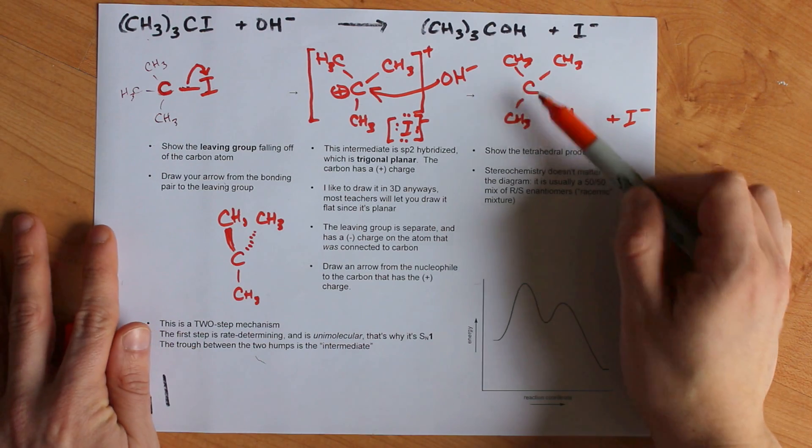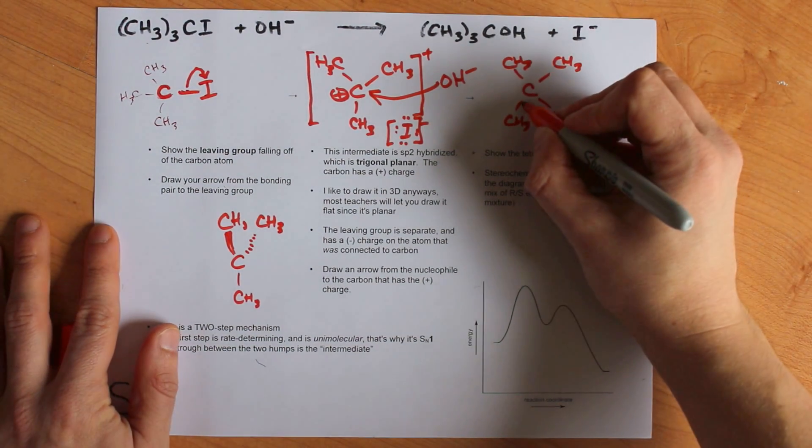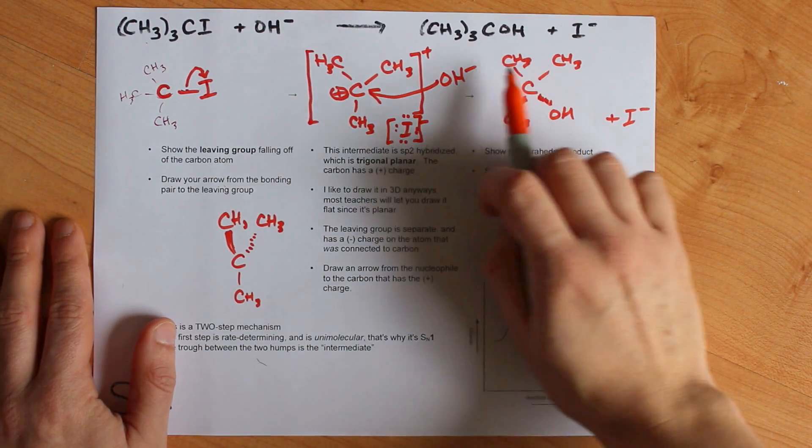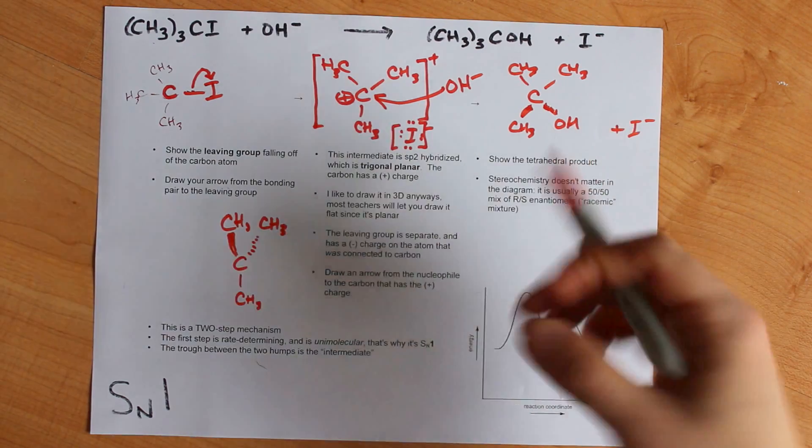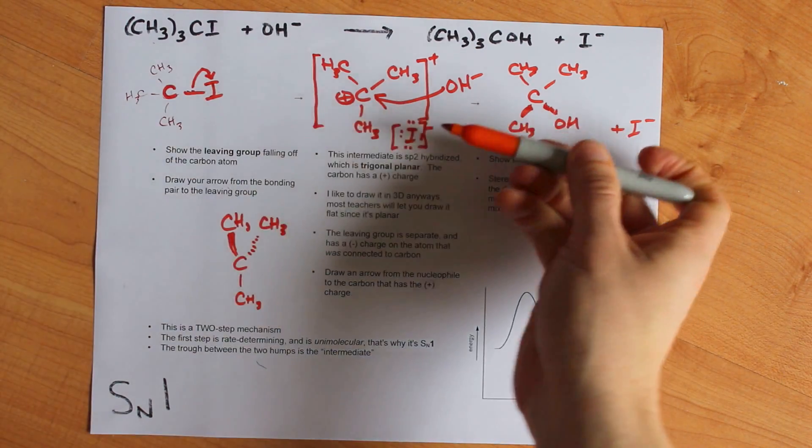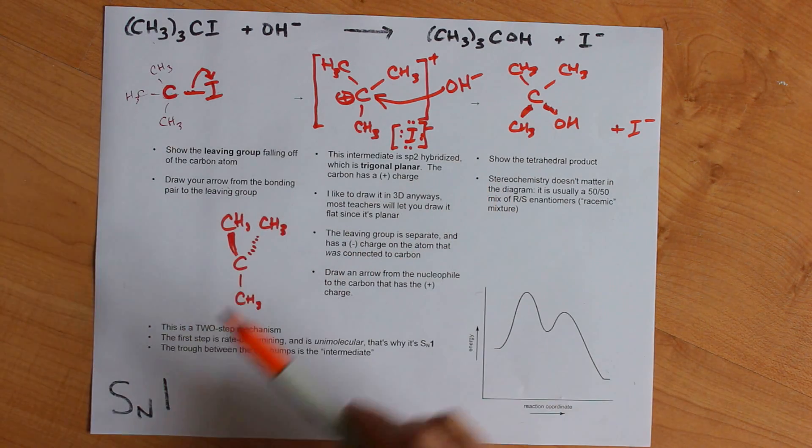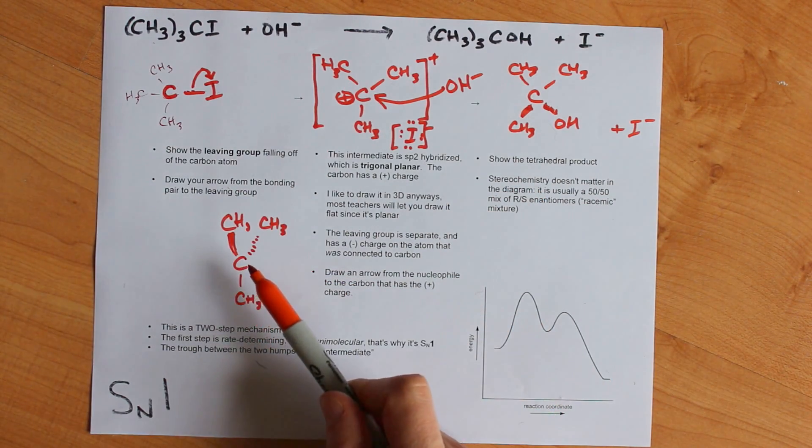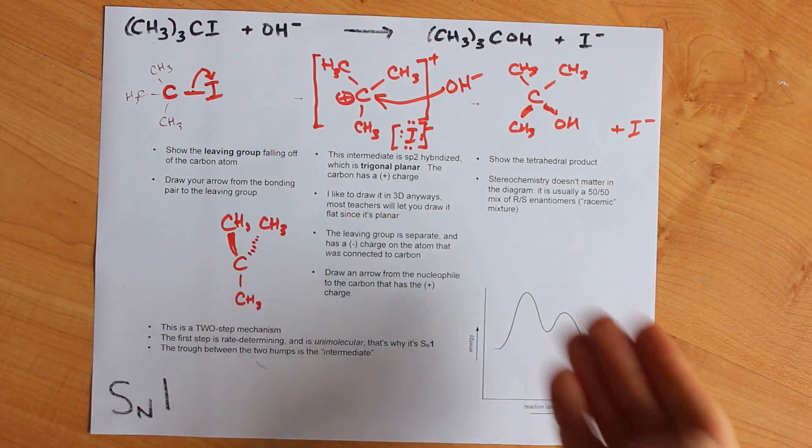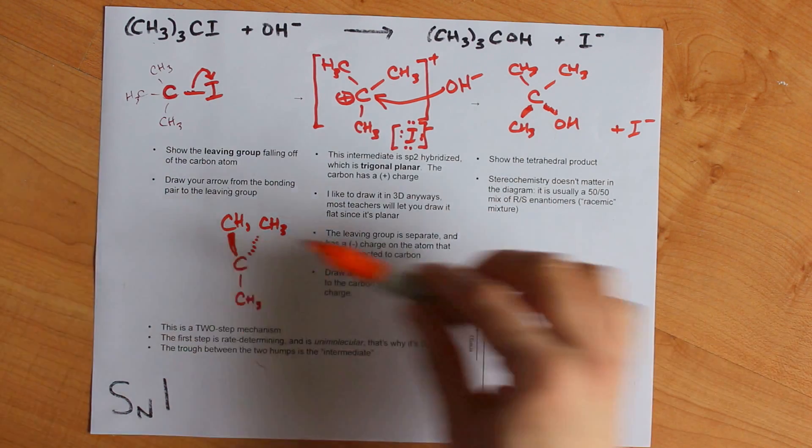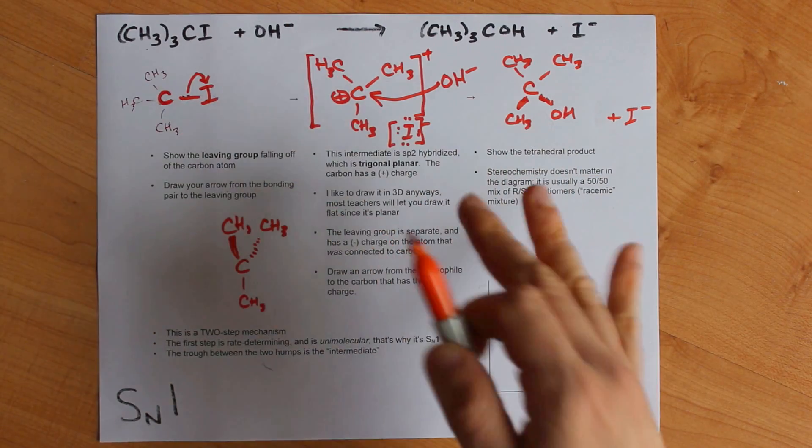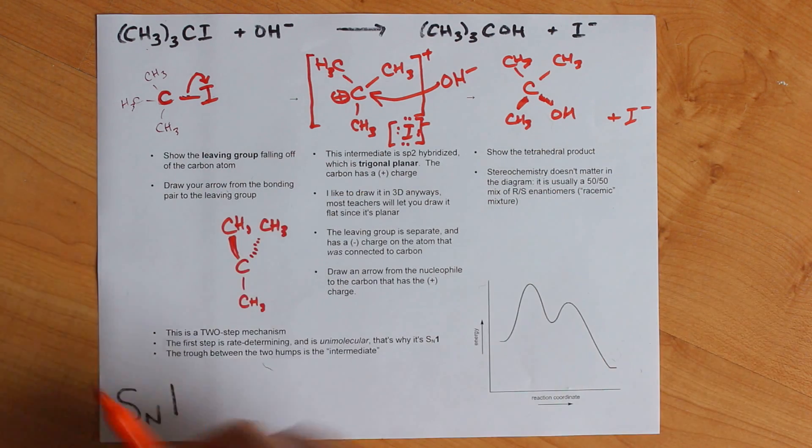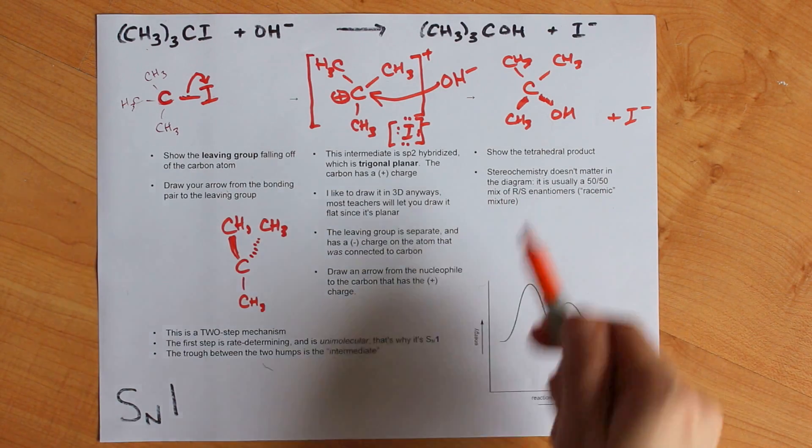This product is now tetrahedral because that carbon is connected to four other things. You should probably show some geometry there. I'll show one of these coming out at us and one of them going back into the page. Even if these three things were different, you're going to get a mixture of stereocenters because the OH could have attacked from above or below, or in this case from the left or the right. If these three things were different than OH, and then an OH comes in, that carbon, that central carbon would be chiral. It would be connected to four other things. Then you have to worry about R, S, and enantiomers. But because the OH can come in from one side or the other pretty much equally, unless you have some kind of long group that would be blocking it on one side, you're going to get a 50-50 mix of from the right, from the left, that's a 50-50 mix of R and S enantiomers.